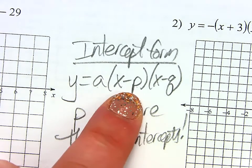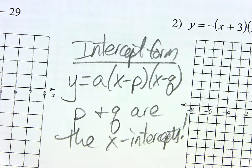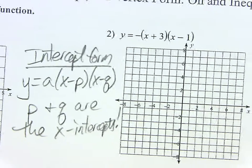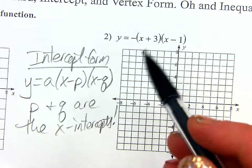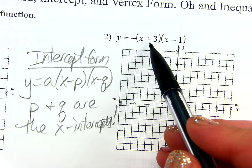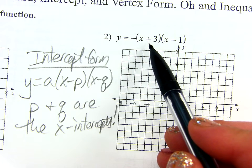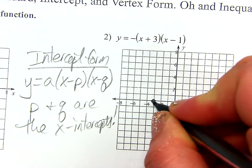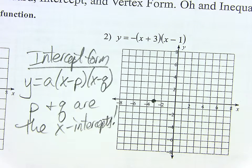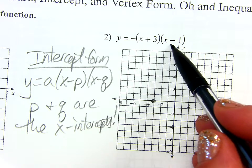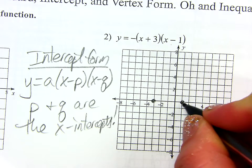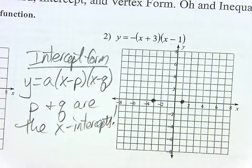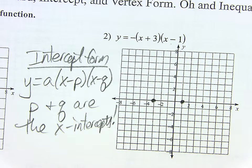So that number out in front is still just A. It still tells me all the same things: up, down, wide, narrow, how to get from the vertex to my next second and third points. So A, and then P and Q are the X intercepts. But since it's a minus in the formula, you're really looking for the opposite of what's there.